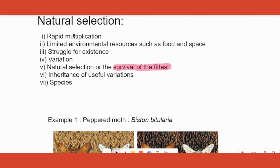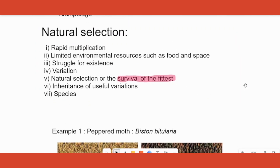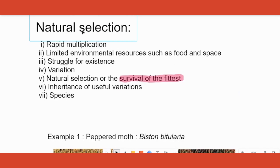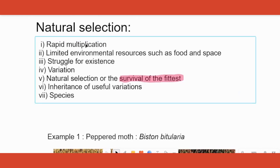Now, what does Darwin's theory say? There are two parts: natural selection and adaptive radiation. Under natural selection, there are certain key points. First and foremost, rapid multiplication occurs — every organism gives birth to progenies in more than the required amount, so too many progenies are created.